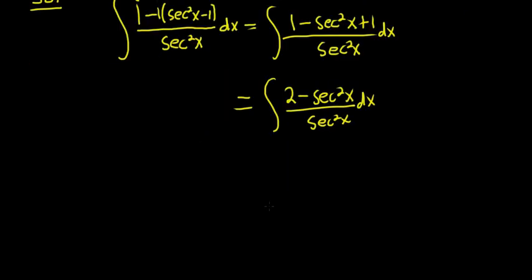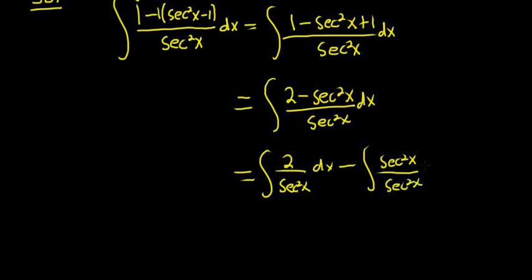That's pretty much the only thing we can do. So this is equal to, so 2 over secant squared x dx. Break it up into 2 integrals minus secant squared x over secant squared x dx.